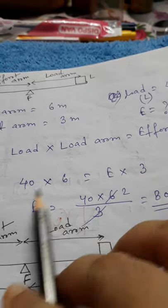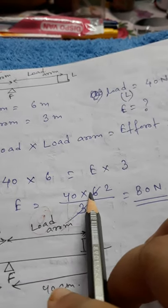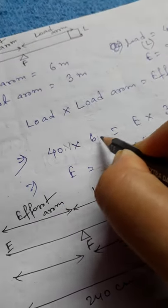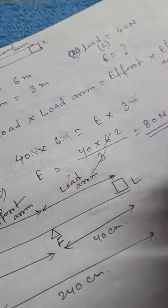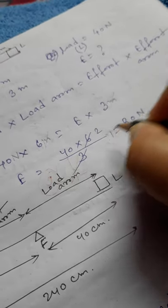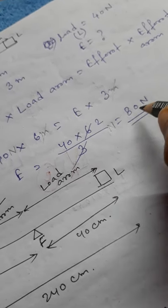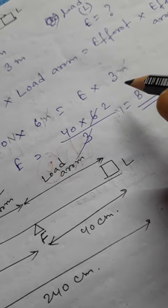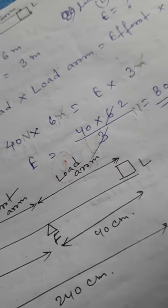So 40 × 6 = E × 3. The meter units cancel out, so the result will be in Newton. E = 40 × 6 / 3 = 80 Newton. So 80 Newton effort is required to lift a load of 40 Newton.